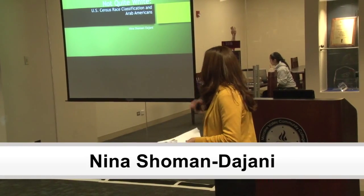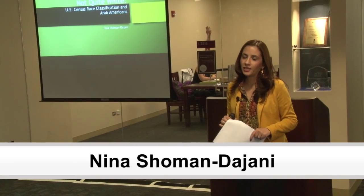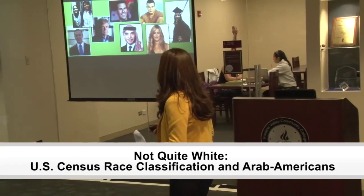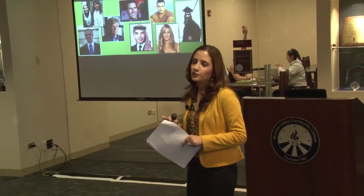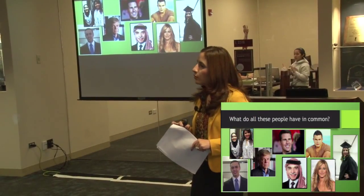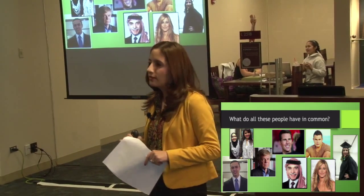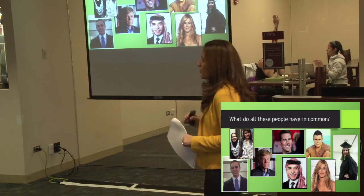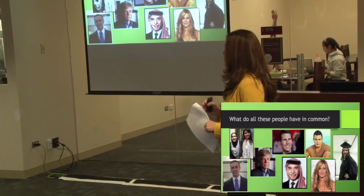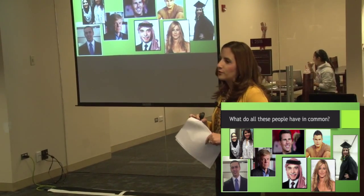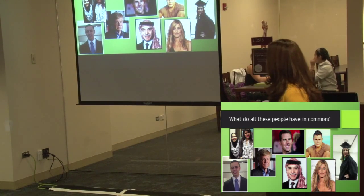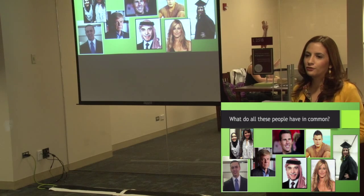Hi everyone. Our topic today is U.S. race classification in Arab Americans. To start our discussion, I have a question for you. Take a look at these photos here. What do all of these people have in common? There may be some familiar faces. We have everyone from our student trustee, Ayman El-Miladi, right there in the corner in the blue tie, to some of our Arab Student Union students, and people like Tom Cruise and Jennifer Aniston.